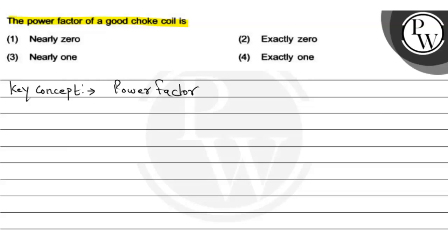Power factor formula is what? Power factor formula is, first of all, we represent cos φ, and the formula is R by Z.